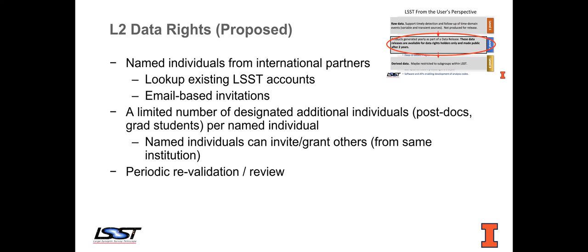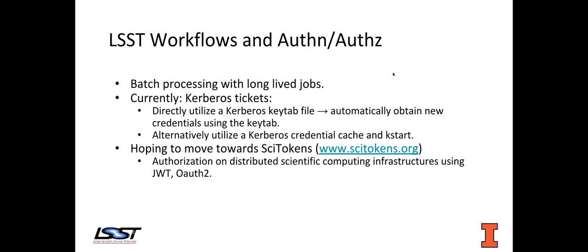We really want to make sure only the people who are currently US astronomers and members of LSST have access to the data. I wanted to point out again why we are working with SciTokens. Batch processing in LSST is very important — it's the process that takes this data and prepares it for release as level two data. This is done currently with long-lived Kerberos tickets; we have a couple of methods to manage these tickets as the job lives on and does its thing. But we're hoping to move towards SciTokens as a much easier way to manage this workflow and ensure the job has proper authorization to access the data it needs.